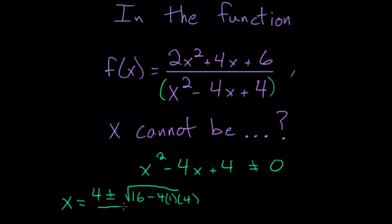This is all divided by twice the coefficient on x squared, which is just 1. Then simplifying, notice that inside the square root we have 16 minus 4 times 4, which is also 16. So 16 minus 16 is 0.